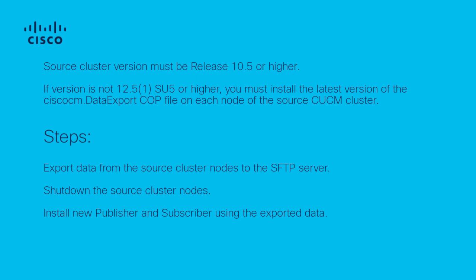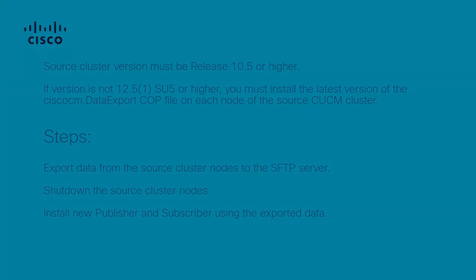Steps included for CUCM cluster upgrade using the data export and import feature: export data from the source cluster node to the SFTP server, shut down the source cluster nodes, and install the new publisher and subscriber using the exported data.